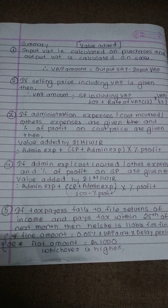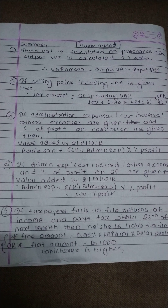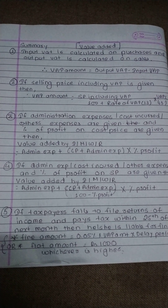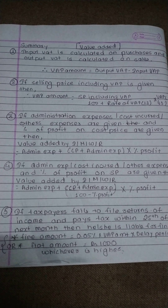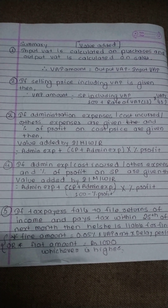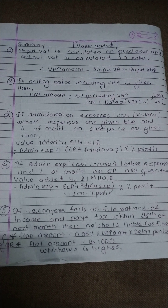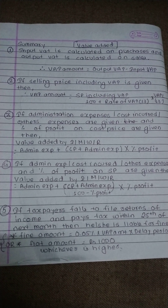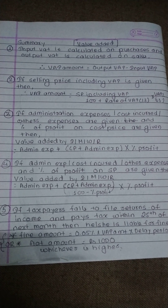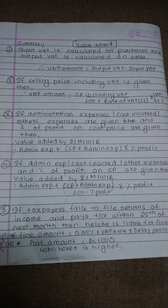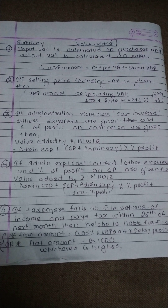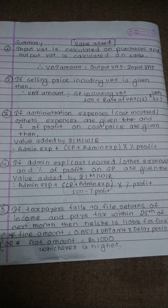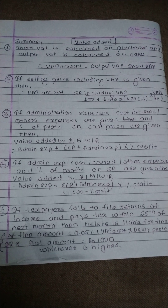Expenses as a percentage, on profit — if the same information is given as a percentage, selling price and value added: admin expenses, cost price, admin expenses divided by 100 minus profit percentage, into profit percentage. Then calculate the tax amount.